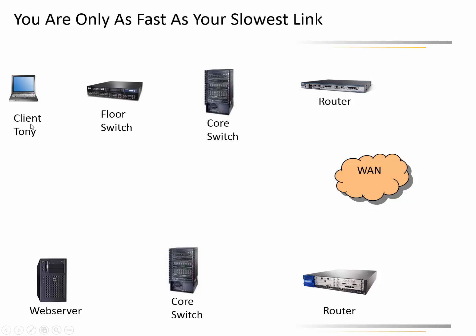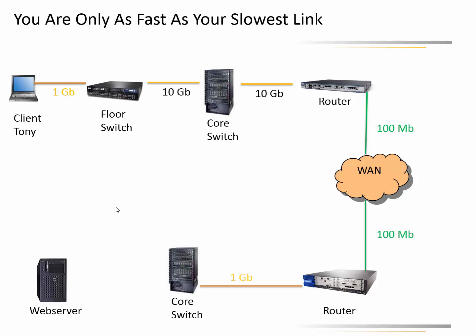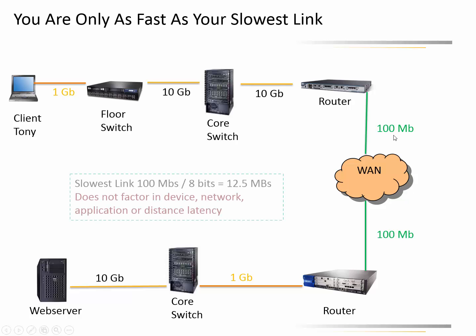Here's our client — that's me, Tony — and the server down here. Following the links: I have a 1 gig link to the switch, then a 10 gig link to the core, a 10 gig link to the router, then 100 megabits per second to the WAN or internet. From there, another 100 meg link to the next router, 1 gig to the switch, and 10 gig to the server. So in this case the slowest link is obviously 100 megabits per second.